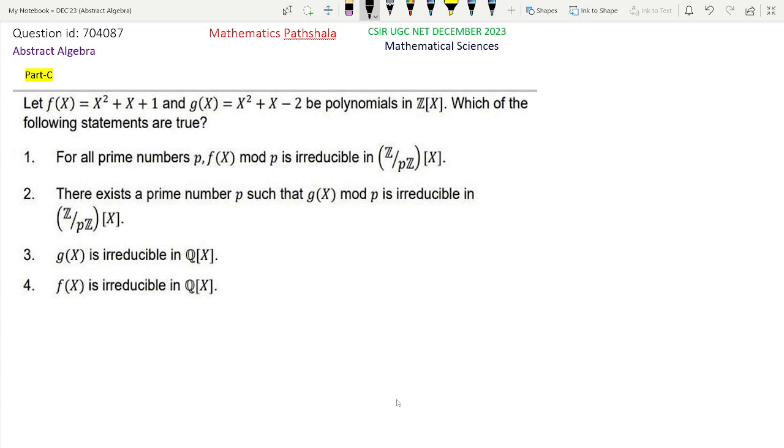Hello everyone, welcome to our channel MathematicsParshala. This is a problem of CSIR NET December 2023 Mathematical Sciences. This is a problem of Abstract Algebra Part C. The question ID is 704087.